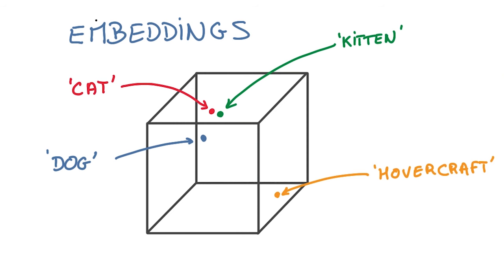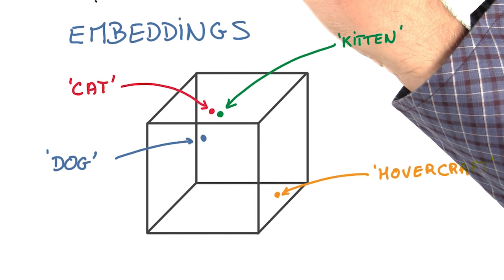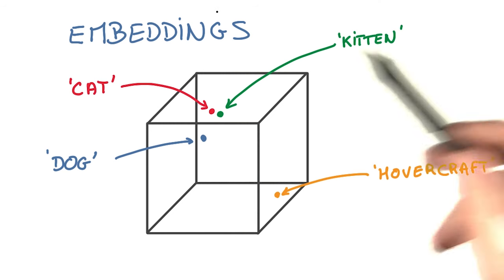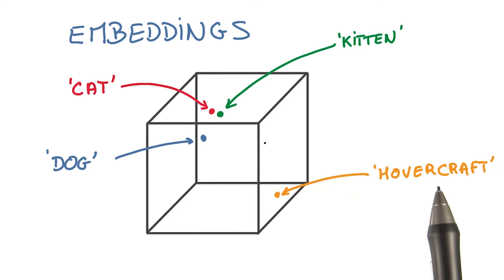In our case, we're going to use it to map words to small vectors called embeddings, which are going to be close to each other when words have similar meanings and far apart when they don't.